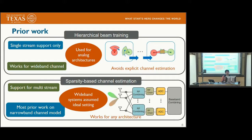To summarize prior work: there has been work on hierarchical beam training using analog architectures, where explicit channel estimation is avoided and the goal is to get the best angle of arrival and angle of departure to point the transmission beams. It works for wideband channels but supports only single stream. For multi-stream communication, sparsity-based channel estimation techniques have been proposed for any architecture. However, most prior work concentrated on narrowband channel models, and extension to wideband frequency selective systems is a relatively fresh area of research.